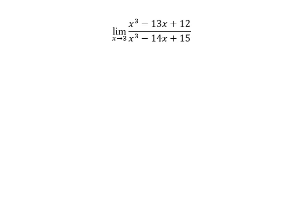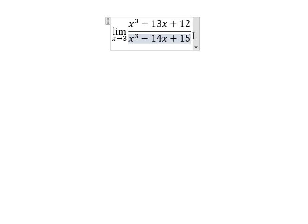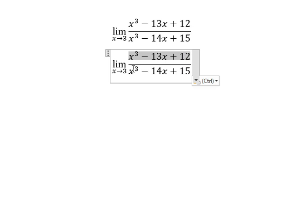Hey guys, welcome back to my channel. Today I want to show you how to answer when I put X approaching number 3. When we go in here, we get number zero over number zero — that means inside of this one and this one we have the indeterminate form.